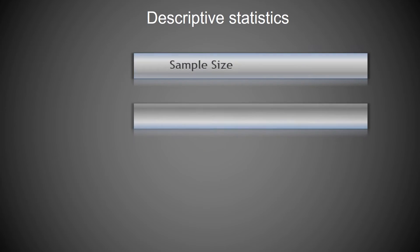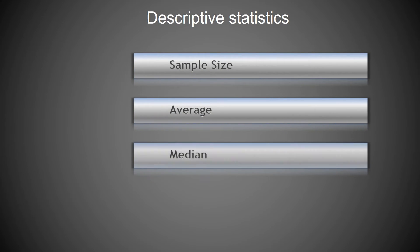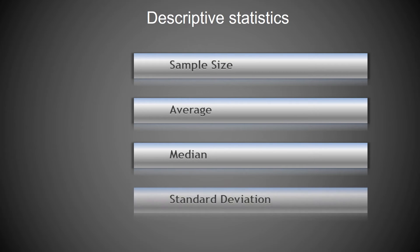Descriptive statistics include your sample size — how many people did you use in your experiment — as well as the average, the median, and the standard deviation. These are commonly used to describe our data.